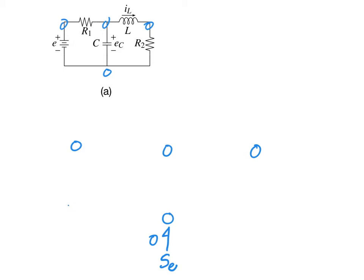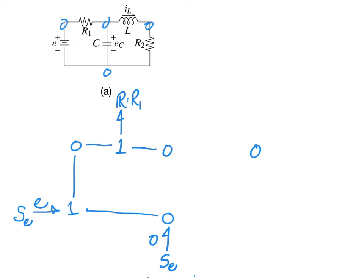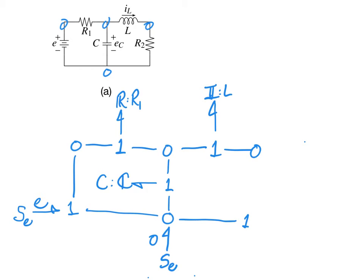Off of one junction, I'll insert a voltage source that will supply E. It goes between this zero junction and this zero junction. Then off of another one junction, between these two zeros, we have a resistor with resistance R1. Then between these two, we have a capacitor with a capacitance of C. Between these two, we have our inductor, which is an I element with inductance L. And finally, between these two, we have another resistor.